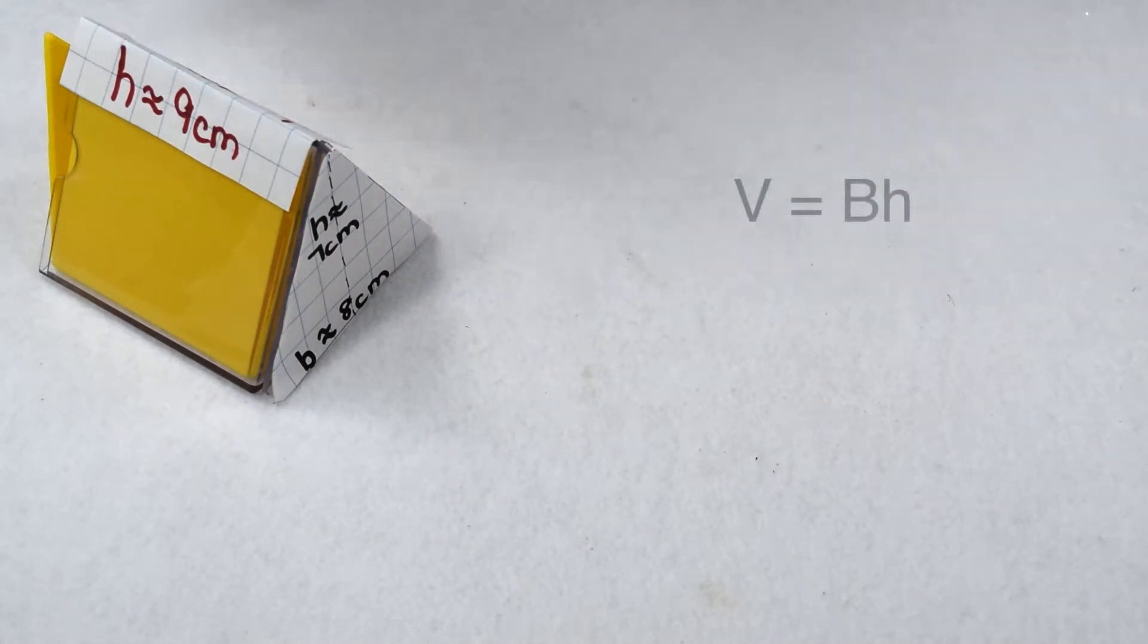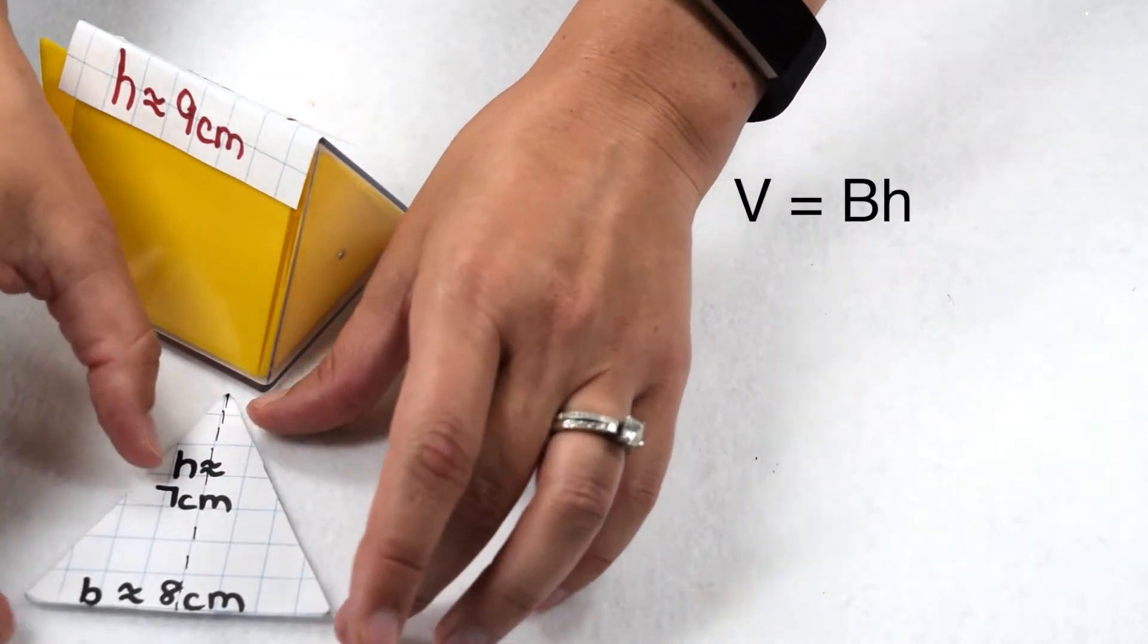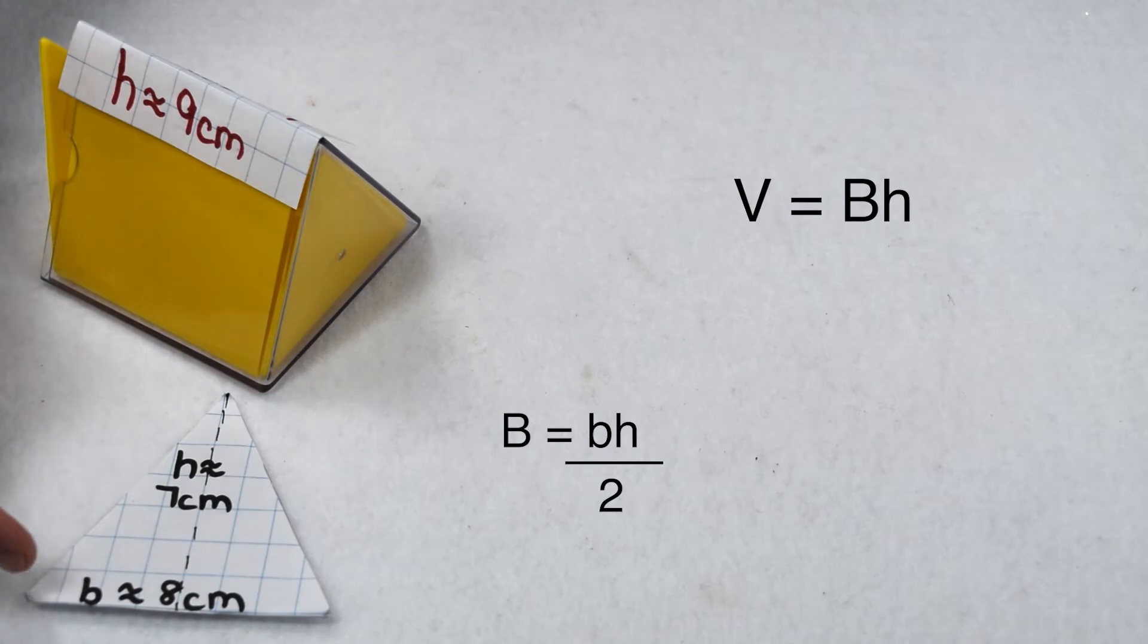Let's start with the triangular prism. V equals BH, so we'll start by finding area of the base. Our base is a triangle in this case, so that means we're going to do base of the triangle times height of the triangle divided by 2. Or in this case, 8 times 7 divided by 2.